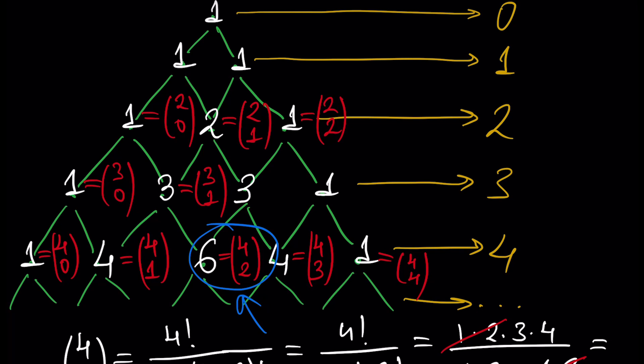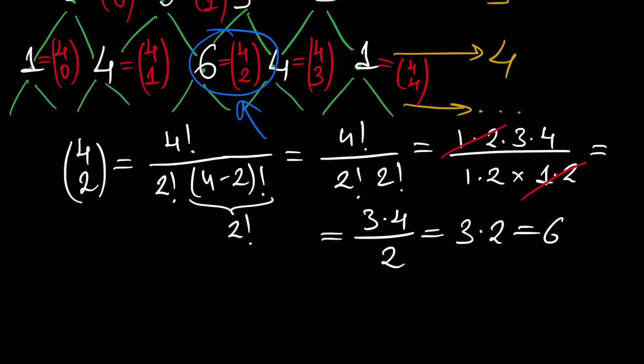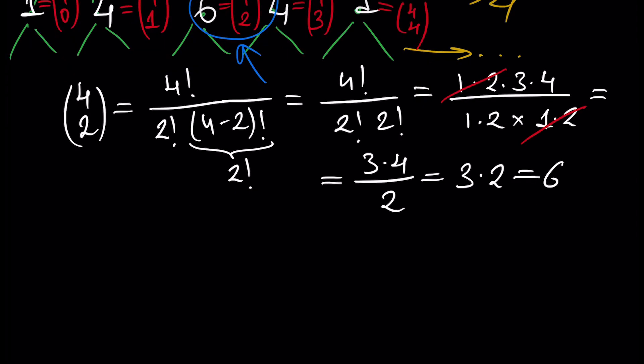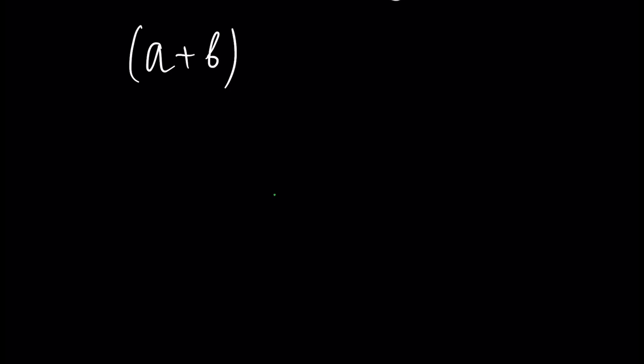So now we know what Hayam Pascal triangle is, and what is the connection between this triangle, factorials, and n choose k. Next, let's explain how to write a shortcut multiplication formula for (a + b) to the power n using Hayam Pascal triangle. I will show it — first of all let's construct Hayam Pascal triangle once again.